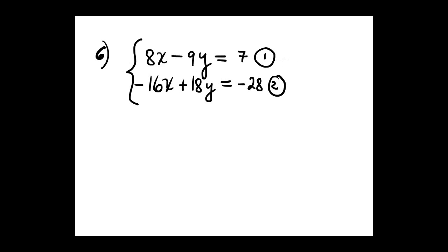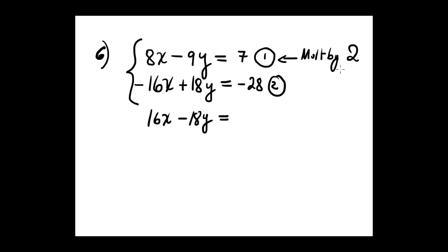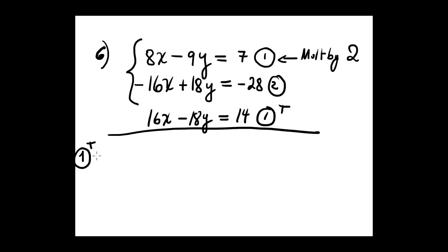Multiplying equation 1 by 2: 2 times 8 is 16x, 2 times negative 9 is negative 18y, equals 2 times 7 which is 14 — equation 1 transformed. Adding equation 1 transformed plus equation 2: 16 and negative 16 cancel out, 18 and negative 18 cancel out, leaving zero. On the right-hand side, negative 28 plus 14 gives negative 14. This is again completely false.